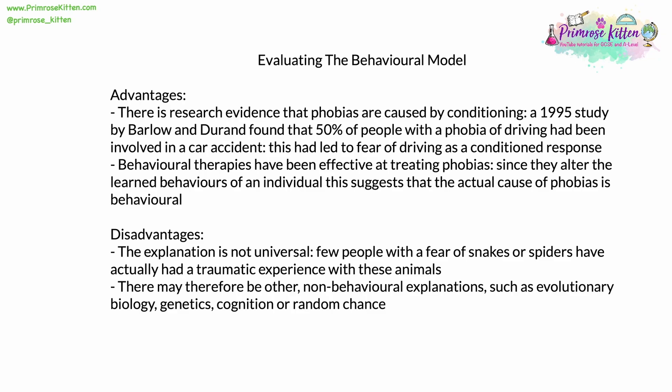Behavioral therapies have been effective at treating phobias, since they alter the learned behaviors of a patient. This suggests that the actual cause of phobias is behavioral. There are also disadvantages. The explanation of behavior for phobias isn't universal — few people with a fear of snakes or spiders have actually had a traumatic experience with these animals. There may therefore be other non-behavioral explanations, commonly evolutionary biology, genetics, cognition or brain function, or even just random chance. Many people think that evolutionary biology goes a long way to explaining some phobias, as being afraid of spiders or snakes is a perfectly rational fear for most people in the world, as these animals do present a grave risk.